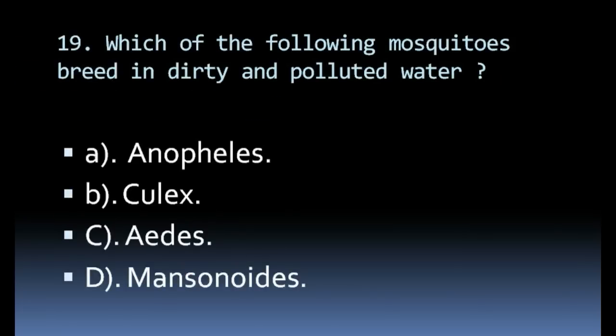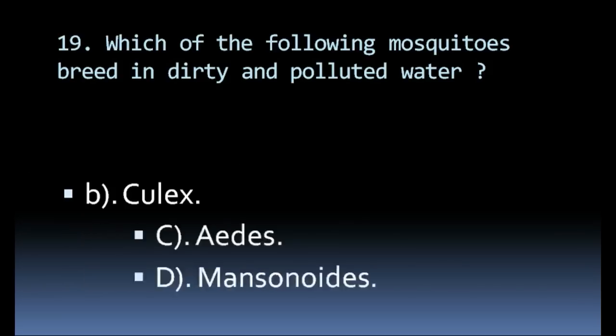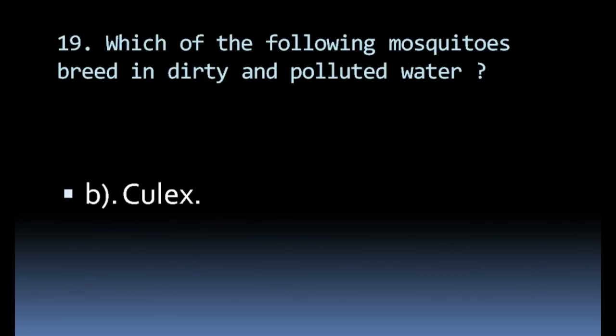Which of the following mosquitoes breed in dirty and polluted water? Options: Anopheles, Culex, Aedes, Mansonoides. Correct answer: Culex.